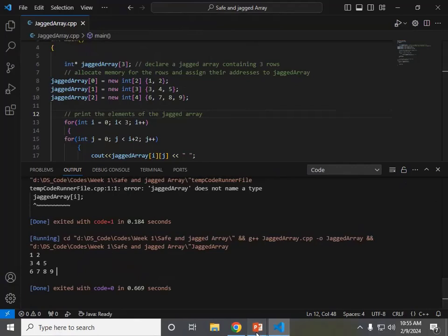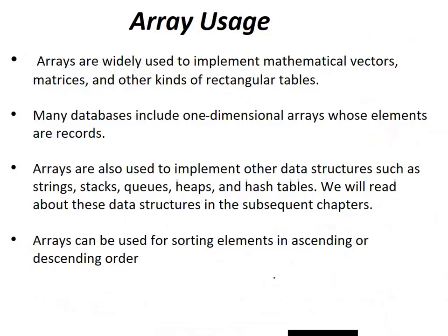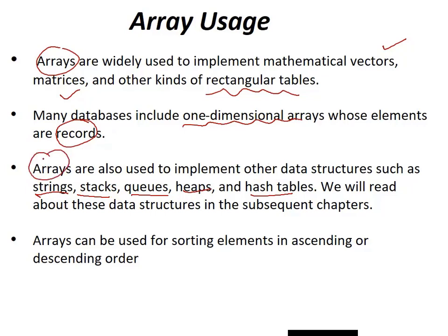As we discussed, this is the proper definition of a Jagged array. We use it in different places, especially in mathematical terms — when we discuss vectors, matrices, or rectangular tables. For databases, a one-dimensional array can save records, and arrays are also used to implement other data structures such as strings, stacks, queues, heaps, and hash tables. Arrays can also be used for sorting elements in ascending or descending order.